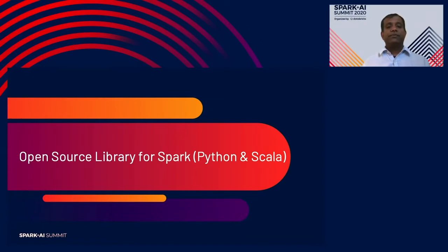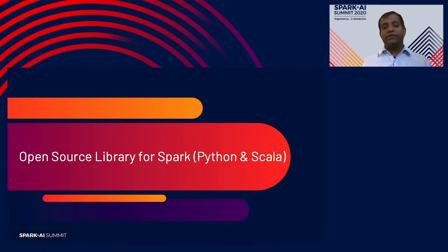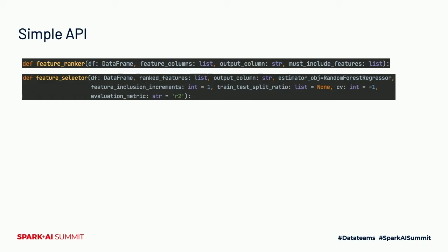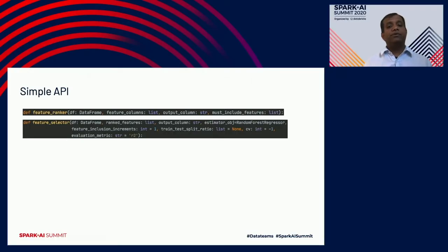Here's our open source library — we'll be open-sourcing it, and it is available both in Python and Scala. There are two main methods. The first is the feature ranker: you pass in a data frame, your feature columns, an output column, and a must-include feature list. The second is the feature selector from the model, which takes the ranked features and figures out the best features to use for final model training.